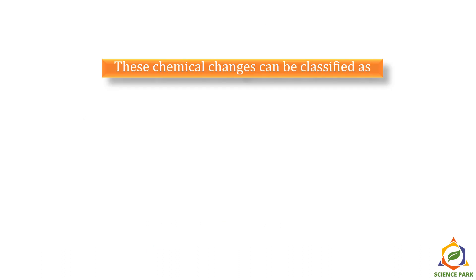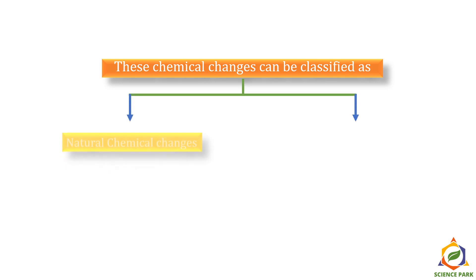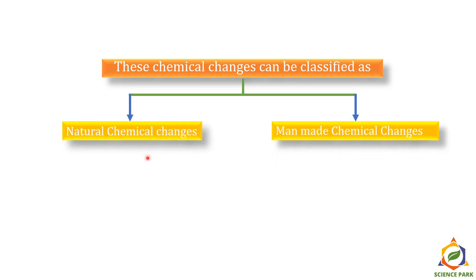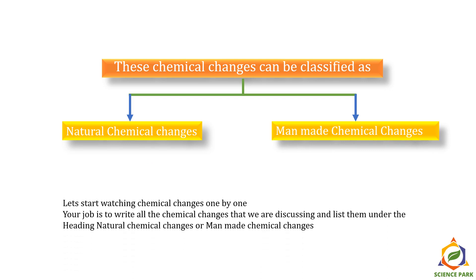These chemical changes can be classified as natural chemical changes and man-made chemical changes. Your job is to write all the chemical changes we are discussing and list them under the headings: natural chemical changes or man-made chemical changes. Pause the video here, write down these two columns in your notebook, and as we go further, list all the changes under the appropriate headings.